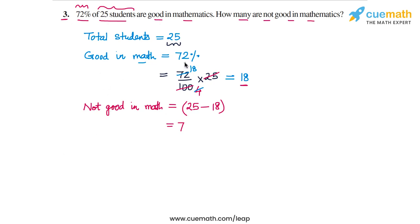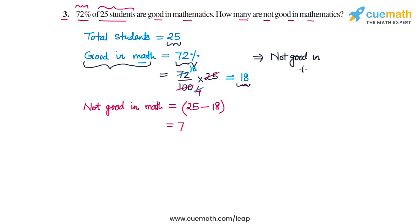The other way to solve the same problem is, instead of calculating the absolute number of students who are good, we first find the percentage of students who are not good in mathematics. We know the percentage good is 72%, so the percentage not good is 100% minus 72%, which is 28%.